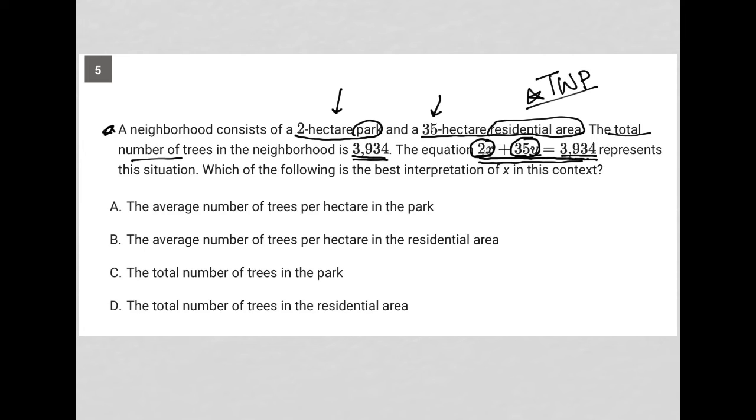it says the equation 2x plus 35y equals 3,934 represents this situation. Which of the following is the best interpretation of x in this context?